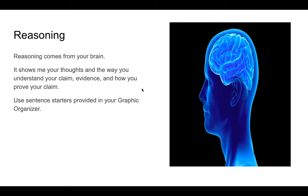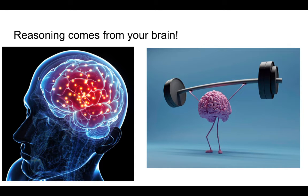Reasoning. Where does reasoning come from? Reasoning comes from your brain. It shows me your thoughts and the way you understand your claim, evidence, and overall how you prove your claim. When you look at your graphic organizers, we have sentence starters for the reasoning, and I usually recommend two to three sentences. Reasoning comes from your brain — you should not be quoting the author at this point, you should not be quoting me. This should be coming entirely from your brain. This is how I know that you can think this thing through.